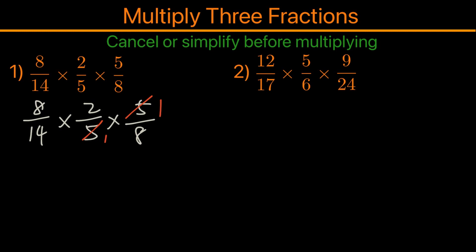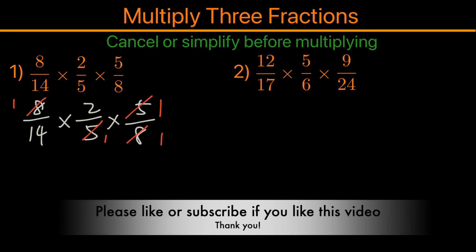Let's see if there's anything else. 8 and 8 also cancel out. Then we have 2 and 14; they're both divisible by 2, so 2 will become 1 and 14 will become 7. Now this becomes very easy.